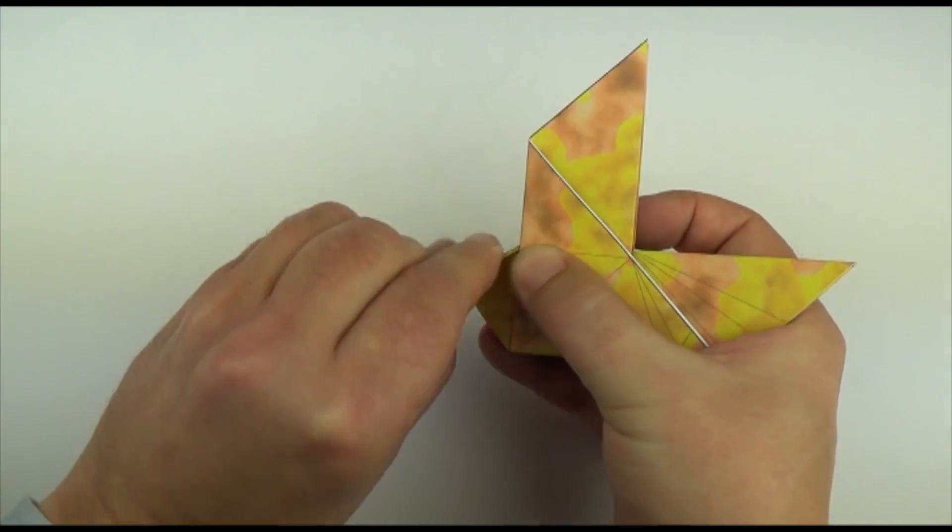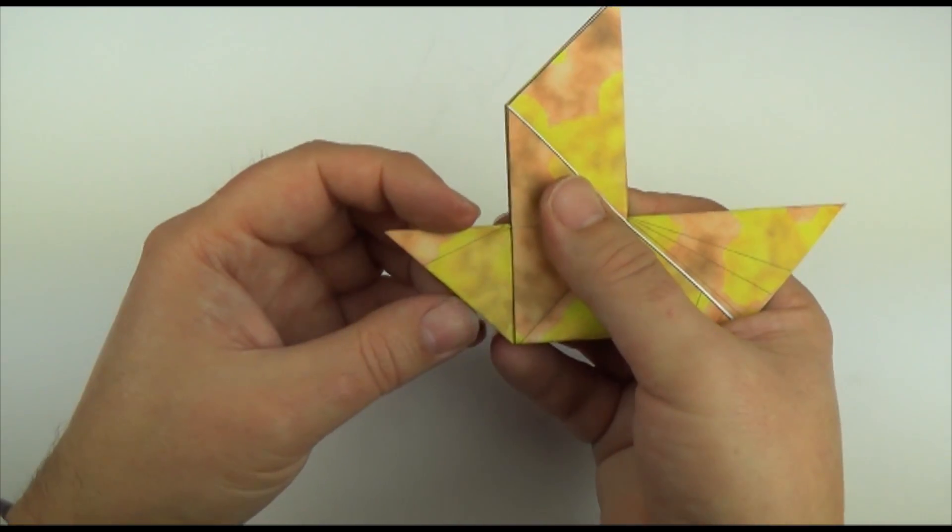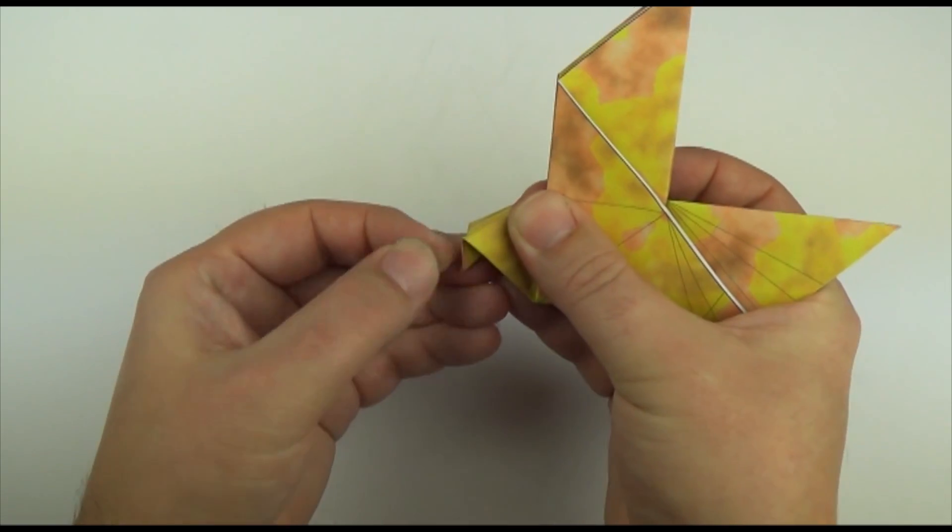Now take this corner. We're going to fold it over first of all. Crease. Open up. And then reverse inside. It'll form the head.